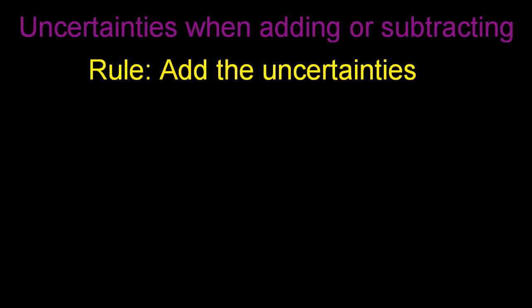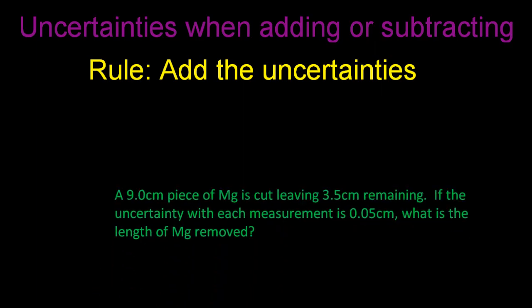So if you're going to add or subtract data, then you have to add the uncertainties. Now don't forget, uncertainties are inherent in the measuring process when you use physical equipment, such as a thermometer or a measuring cylinder. So here's the first question.